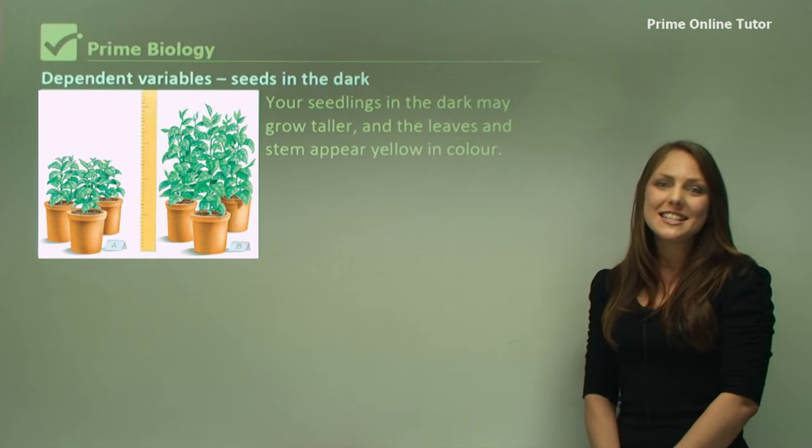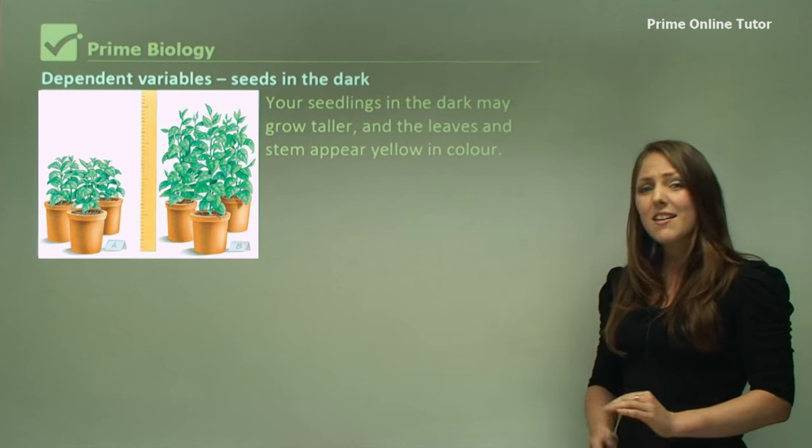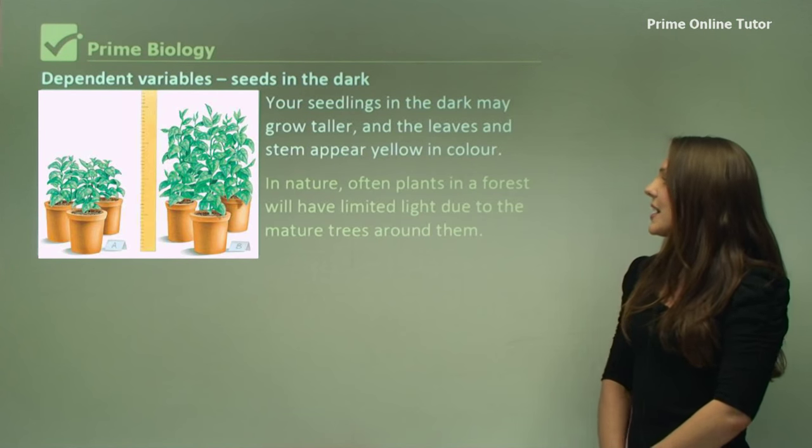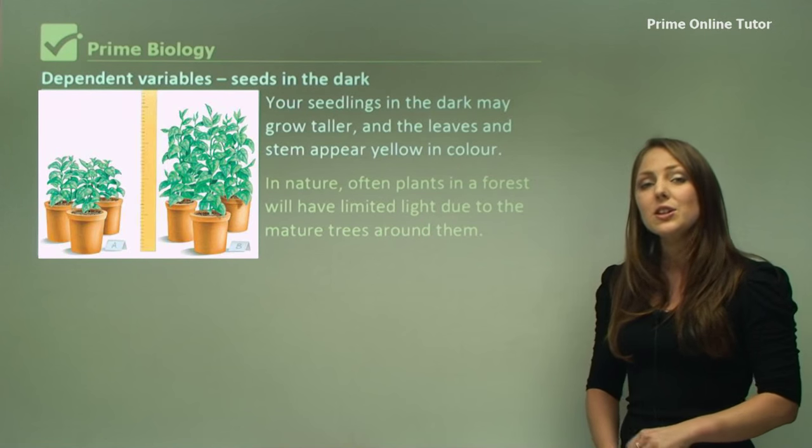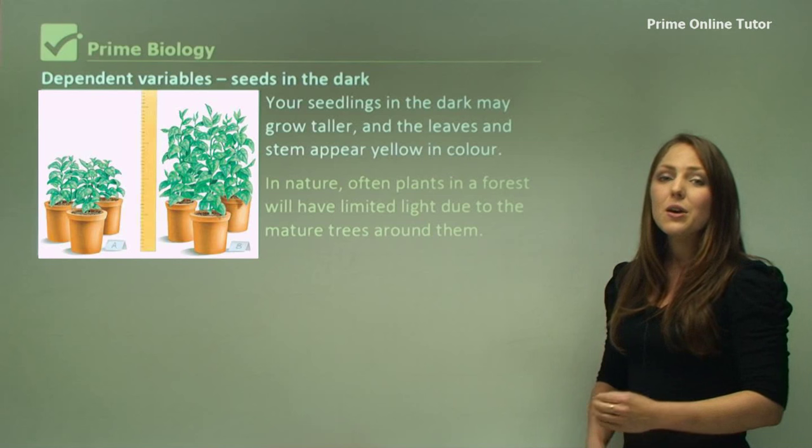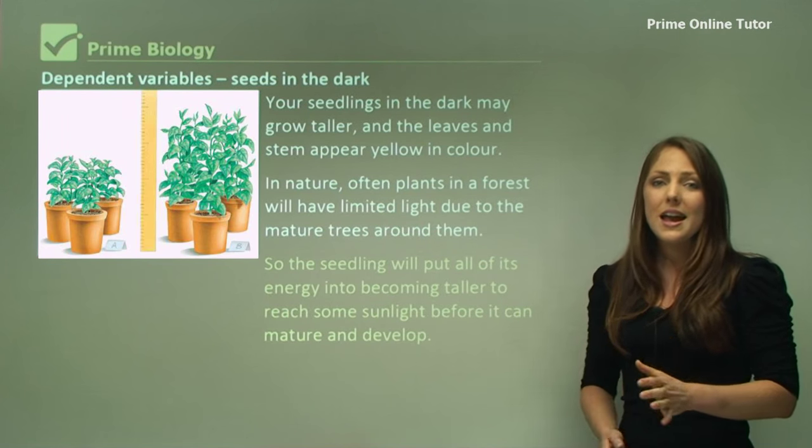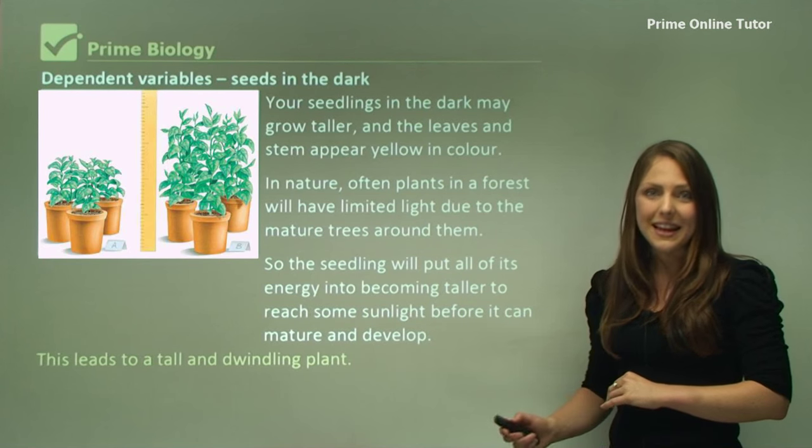The seeds in the dark may grow taller and also appear skinnier and they will have a yellow colour in the stem. In nature, often plants in a forest will actually have a limited light due to the canopy of the trees above them, so they'll use all the energy in the seed to grow tall and thin. This will lead to a very dwindling and tall plant.